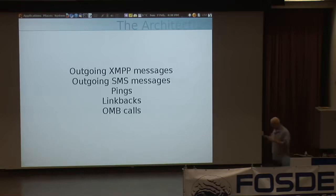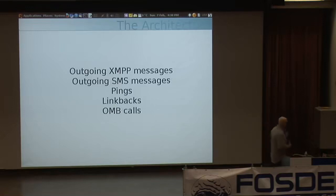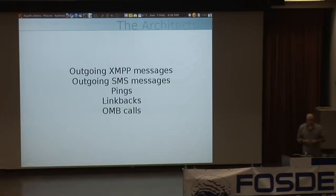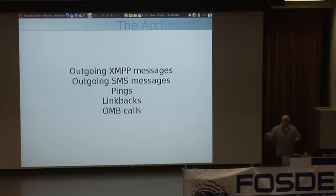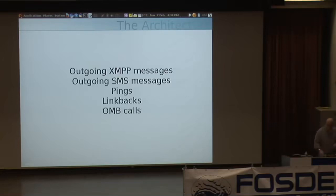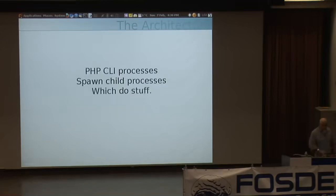A lot of the work that is time-intensive or uses external systems or fans out pretty high — we use offline queuing servers to handle that work. Things like outgoing XMPP messages, outgoing SMS messages, and OMB messages going out to other systems all happen on backend systems. Optionally by default they'll happen at web time, and usually we'd expect that you'd have very little of this configured on a system that couldn't handle offline processing.